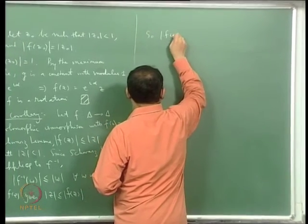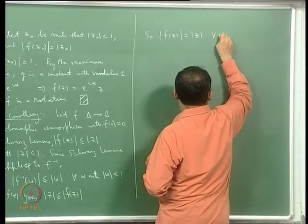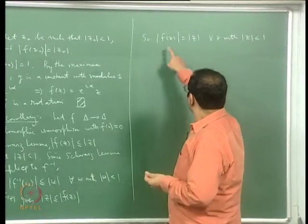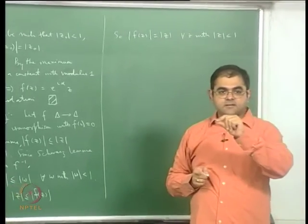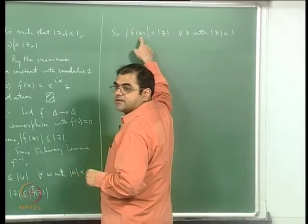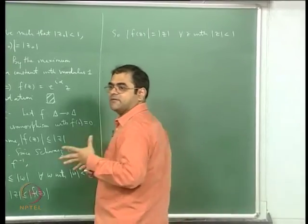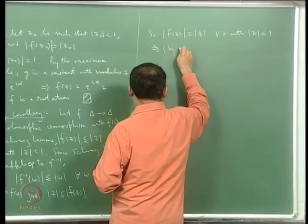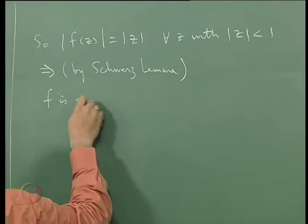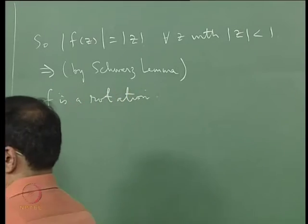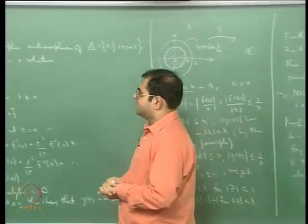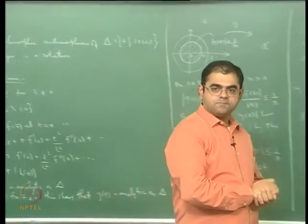Since |f(z)| = |z| holds for all points of the unit disc — more than we need — Schwarz Lemma implies f is a rotation. That proves the corollary: the only holomorphic automorphisms of the unit disc that fix the origin are rotations.